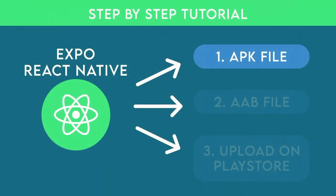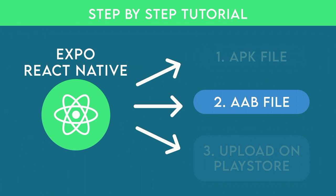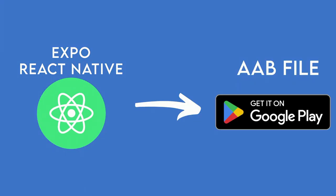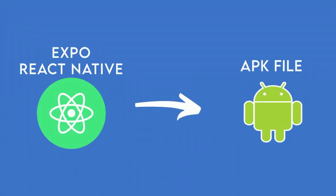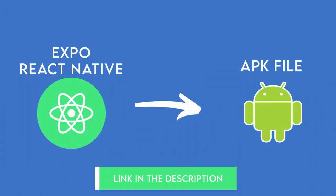In the next video we are going to continue from here and see how to create an AAB file and upload it to the Play Store. The next topic in our series is how to create an AAB file from our Expo React Native project. In the previous video we learned how to create an APK file — if you missed it, the link is in the description.